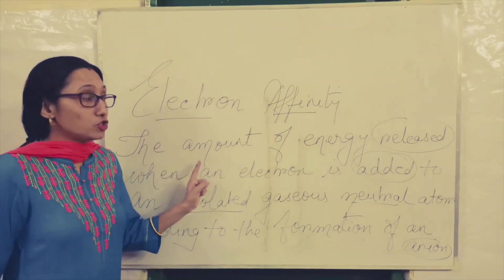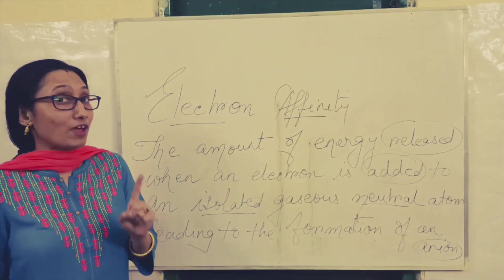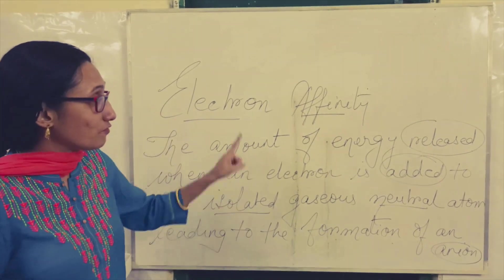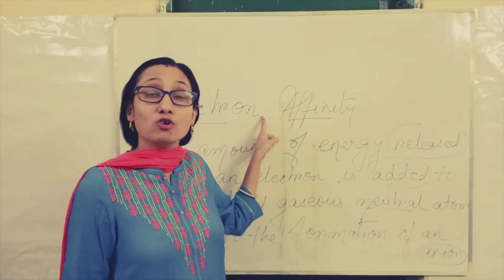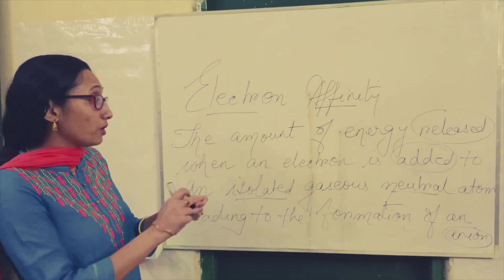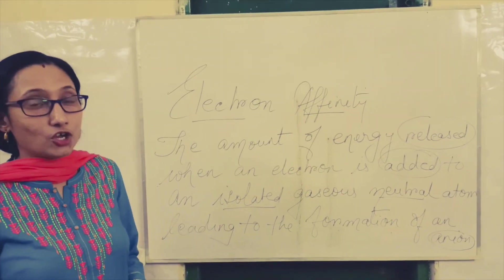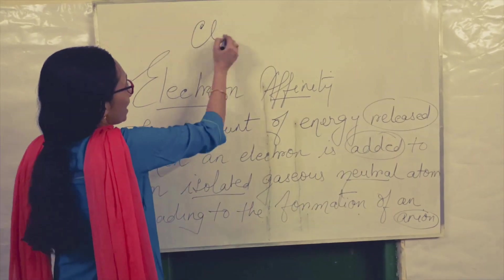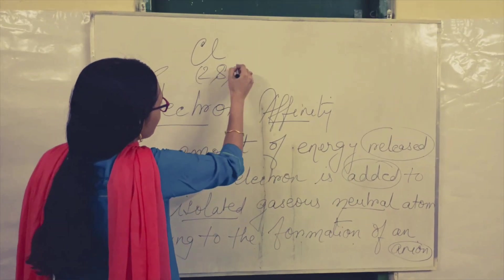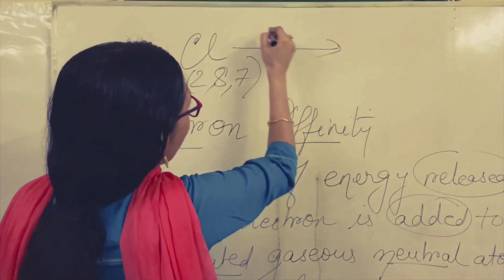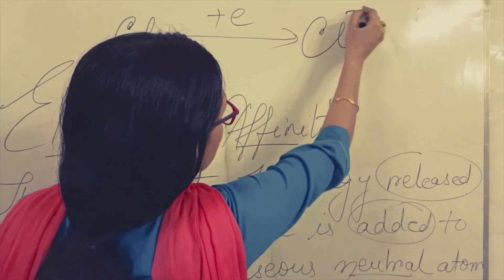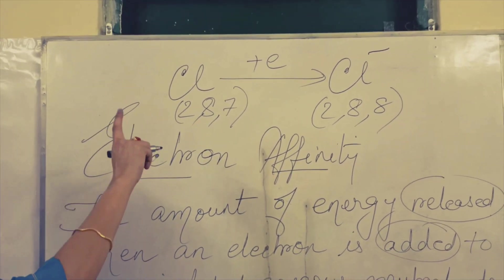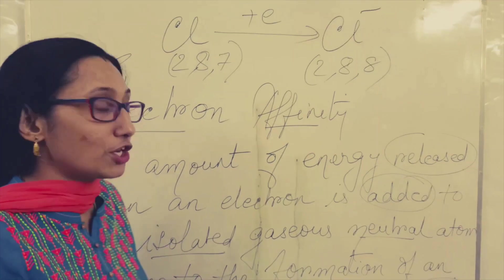Be very careful — in case of ionization potential, you write the amount of energy required, but in case of electron affinity, we write the amount of energy released when you are adding one electron to an isolated gaseous neutral atom. For example, Cl has the electronic configuration 2-8-7. If you add one electron, Cl becomes Cl⁻. When you add one electron to a neutral atom, it leads to the formation of an anion.